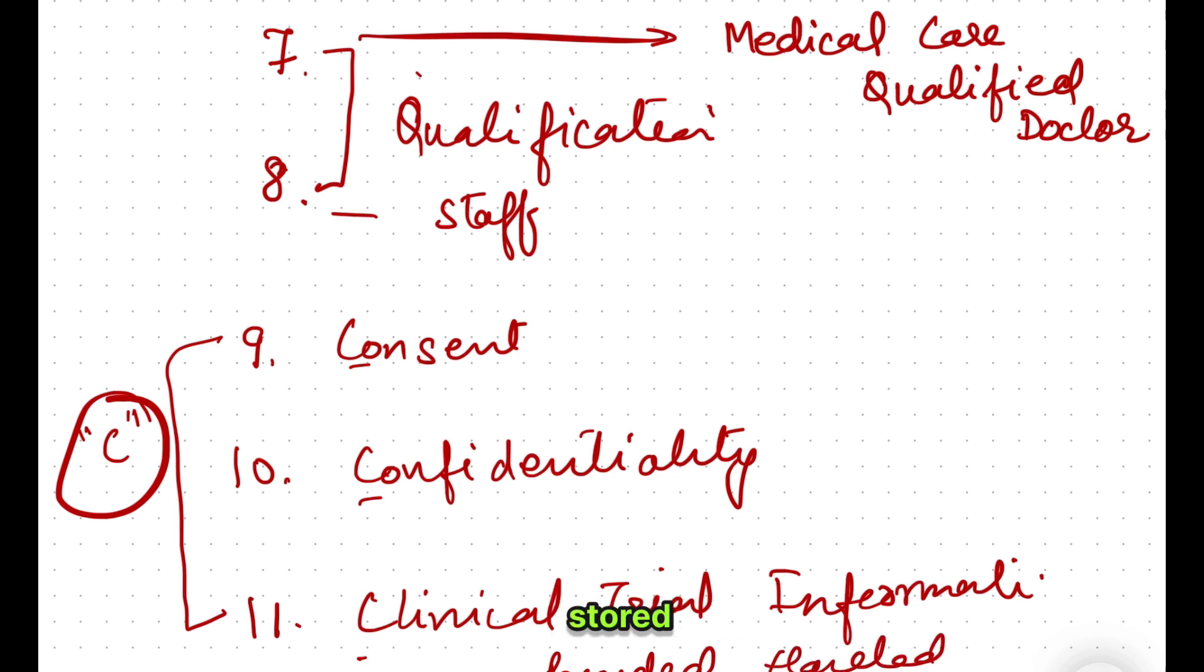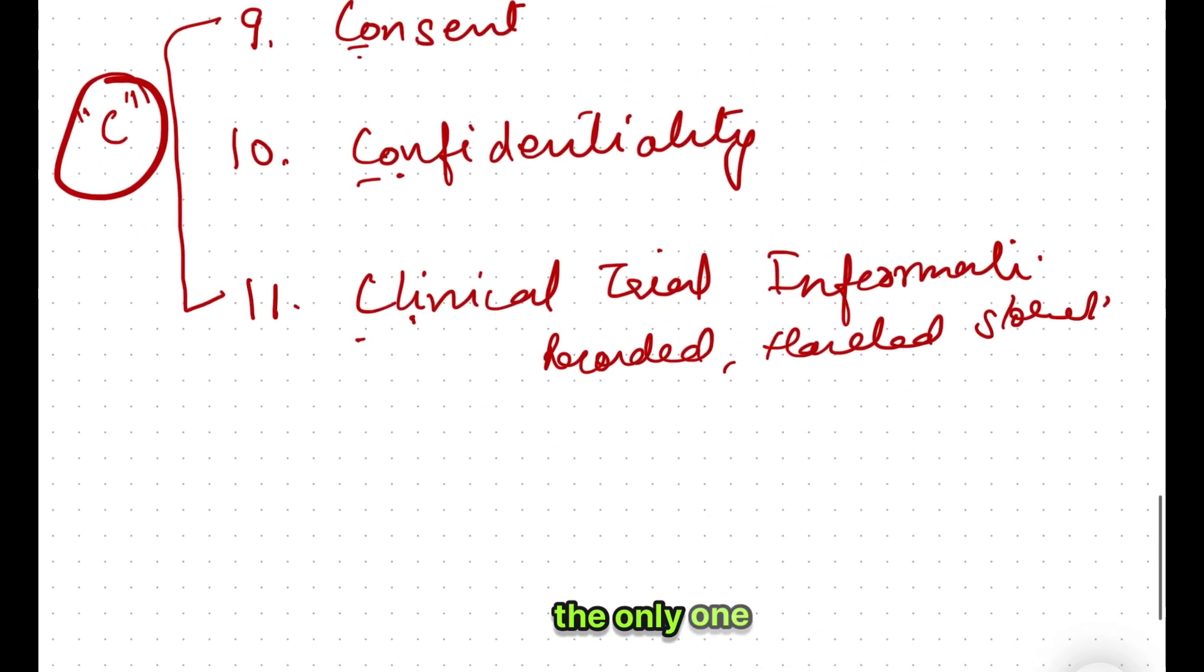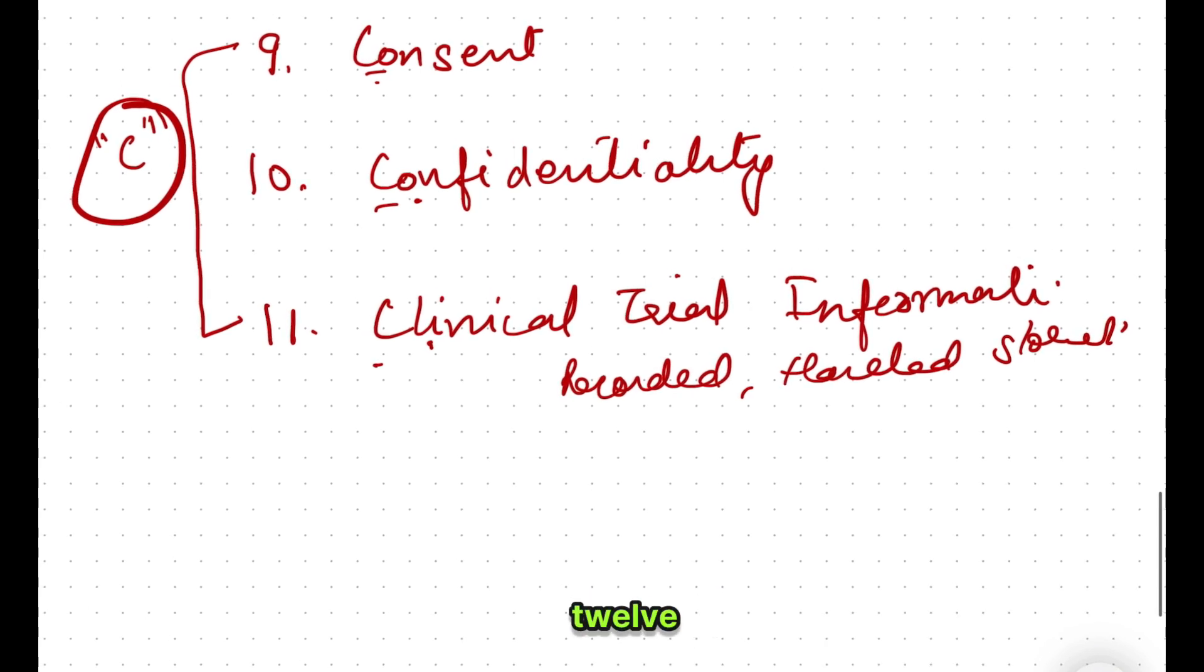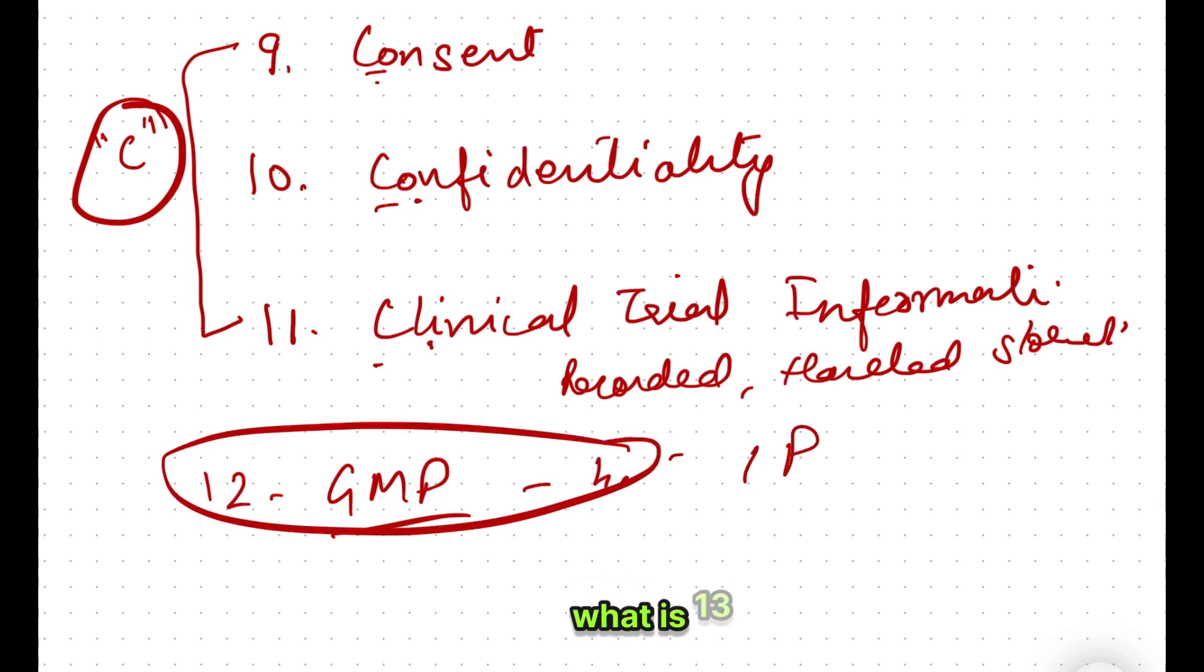After this, only one principle has been left - the 13th principle, because the 12th we already covered earlier. We linked it to principle number four, which is on IP. What is the 13th principle? This is the only principle that you have to memorize on its own. The 13th principle is speaking about quality - quality assurance, which is QA, and quality control, which is QC. If you want to know the difference between the two, there is a video on our channel. Quality assurance is your audit, quality control is your monitoring.